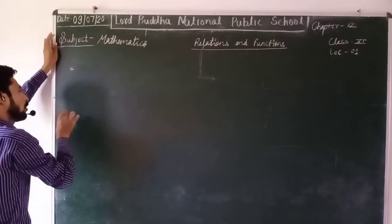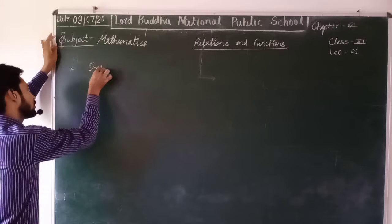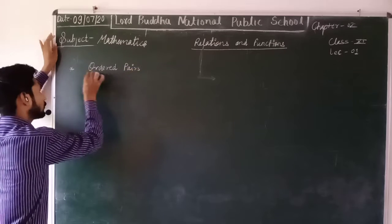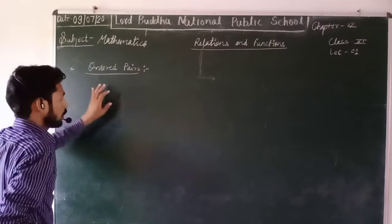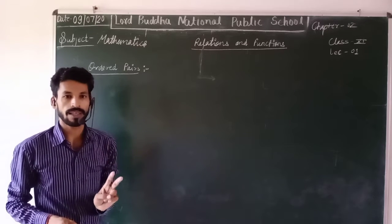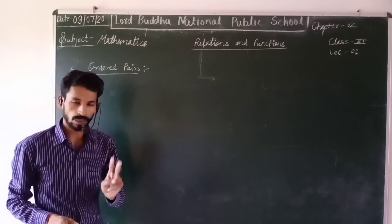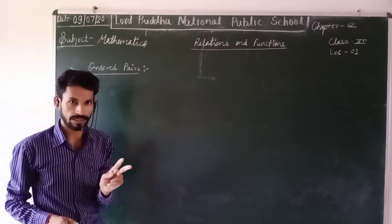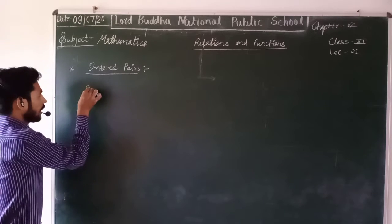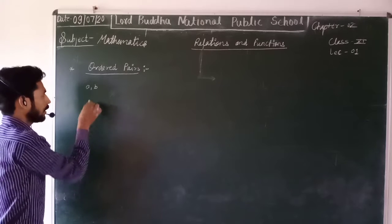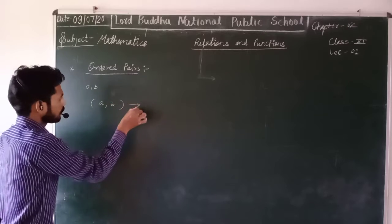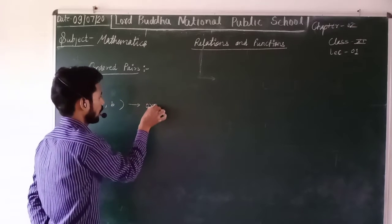The first topic is ordered pairs. What are ordered pairs? This is the systematic way to represent two things in Cartesian form. When two things are represented together in Cartesian form, it is called an ordered pair. For example, A and B are two things; when A is written in a small bracket with a comma, this notation is known as an ordered pair.